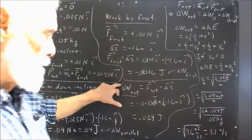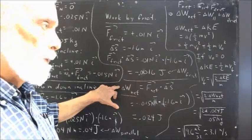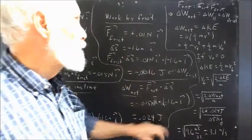Well, again, we find that in moving 1.6 meters down the incline, the work done by the net force is 0.024 joules.